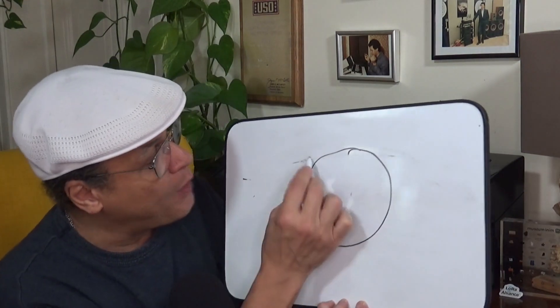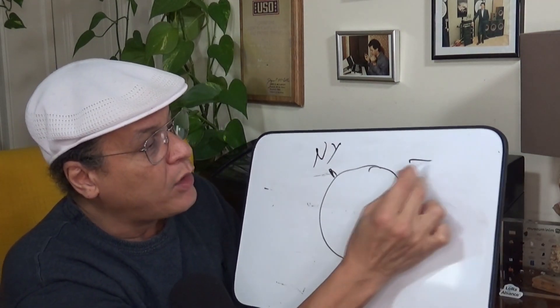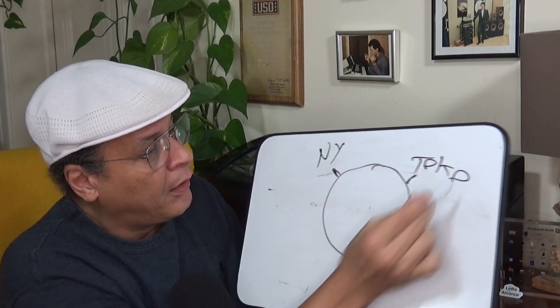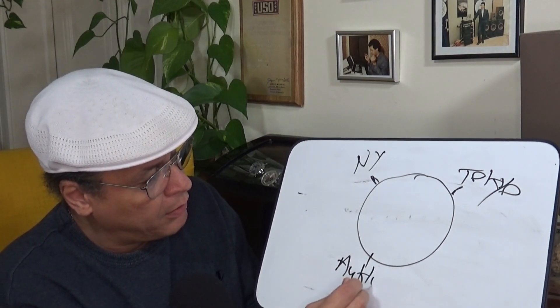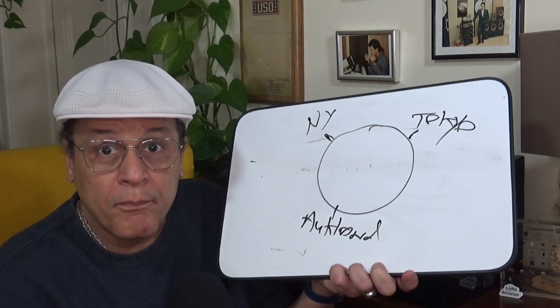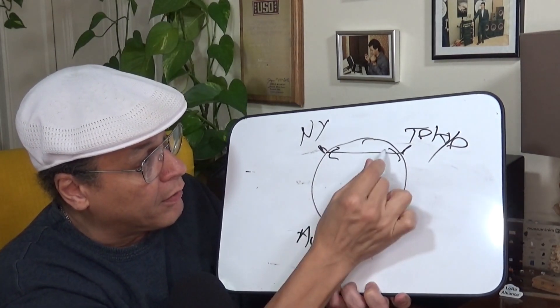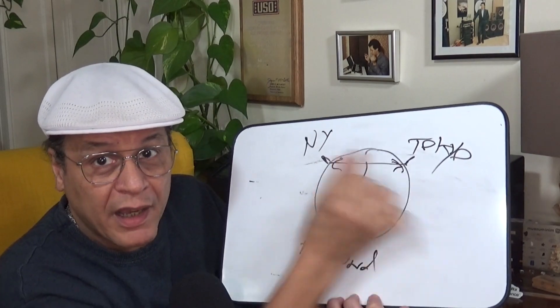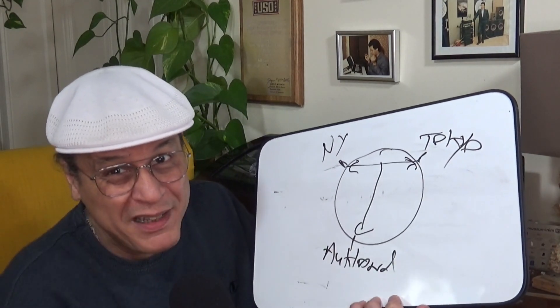We're talking about the entire earth, so that means you have to have the accurate time in New York, the accurate time in Tokyo, and the accurate time in Auckland. These places are communicating with each other, so the time sync has to be accurate all around the planet, compensating for the different locations on earth. So how does the internet actually accomplish that?